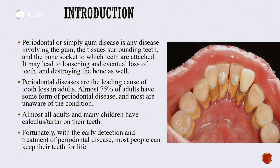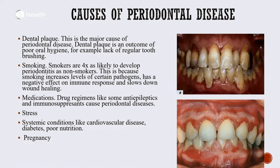Fortunately, with early detection and treatment of periodontal disease, most people can keep their teeth for life. Now let's look at the causes and risk factors. The main culprit is dental plaque. Dental plaque is the major cause of periodontal disease, and it is an outcome of poor oral hygiene — for example, lack of regular toothbrushing or poor toothbrushing techniques that leads to plaque being retained around your teeth.